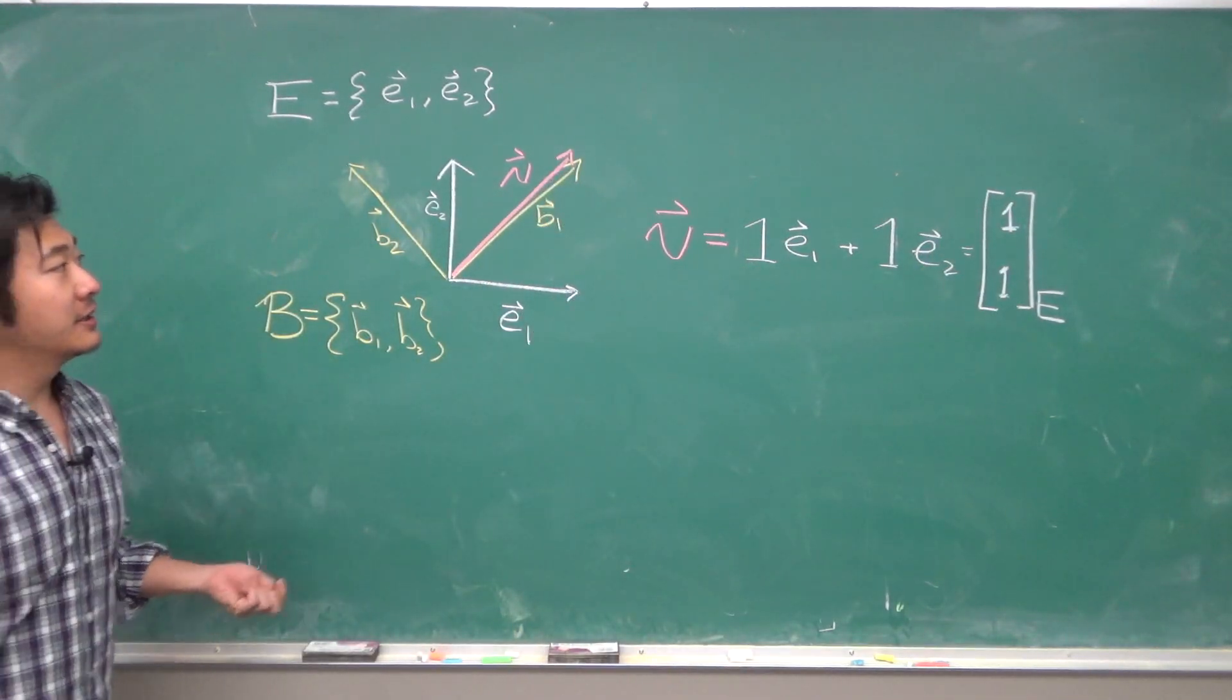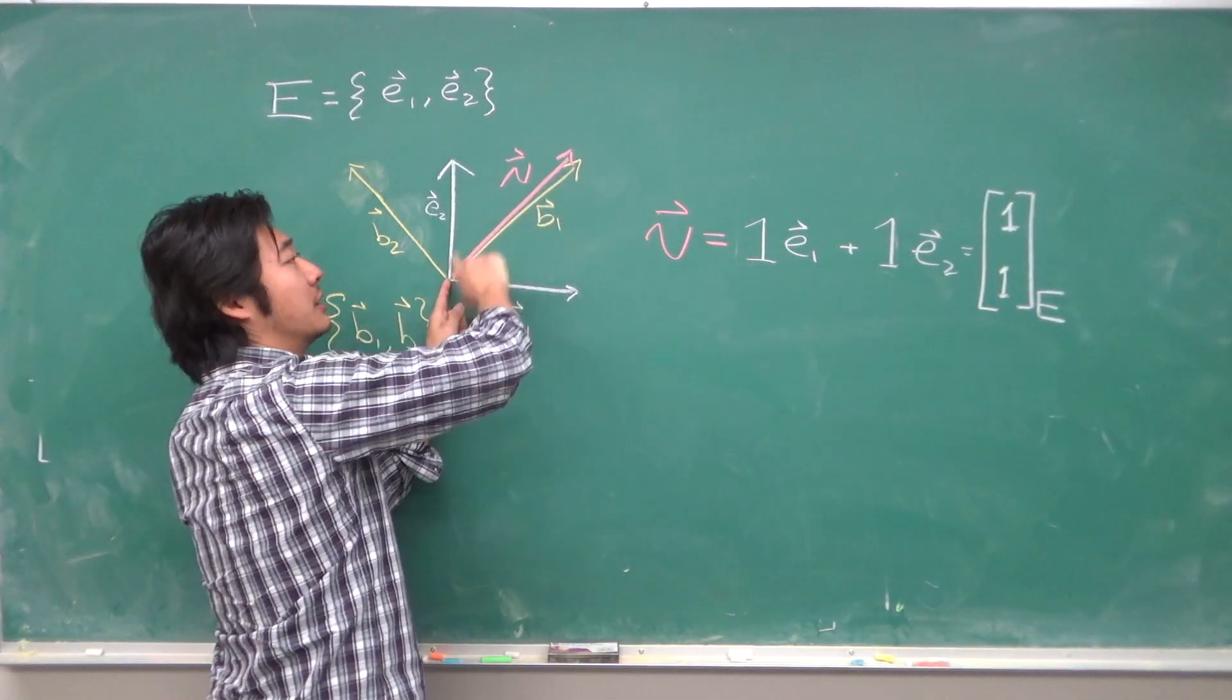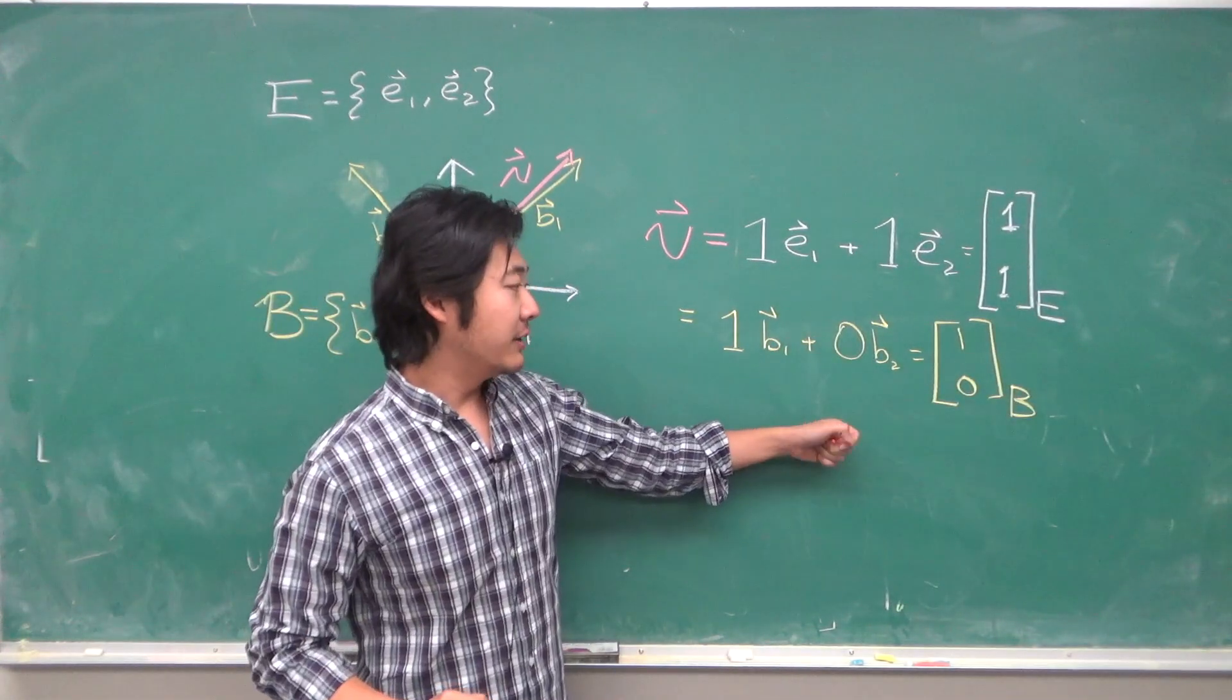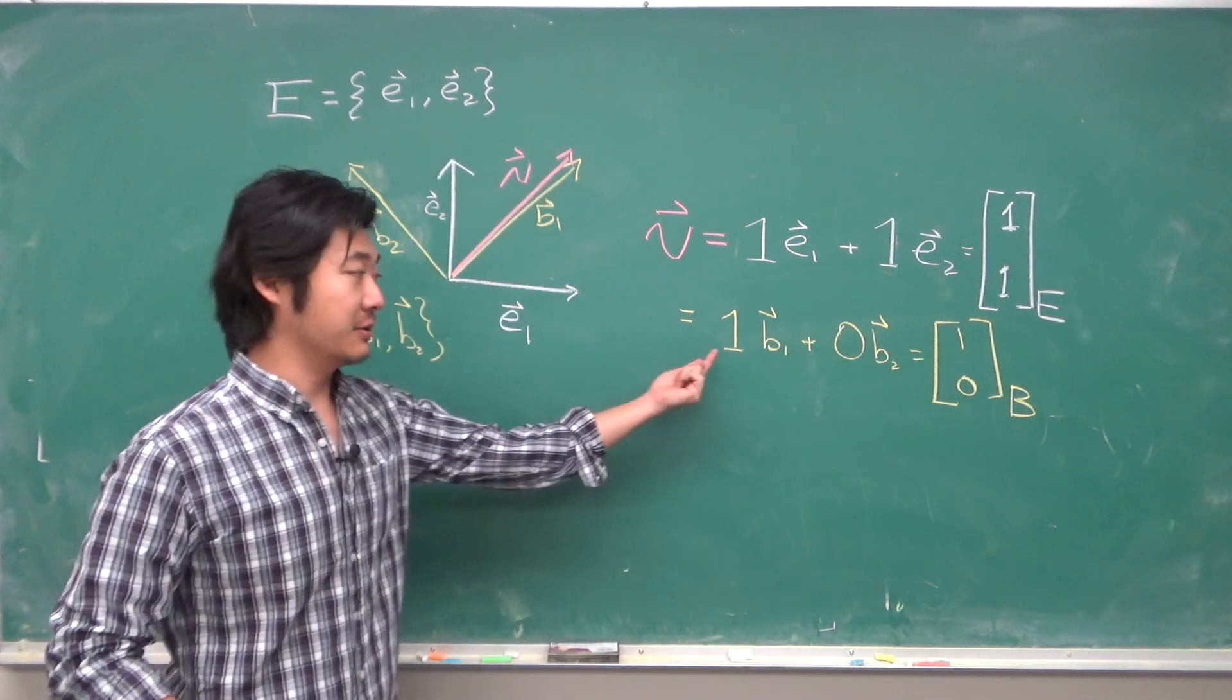If we were to write this in the B basis, then it goes one unit in the B1 direction and then zero units in the B2. So I would write this in the B basis as 1, 0, because there's 1, and 0.